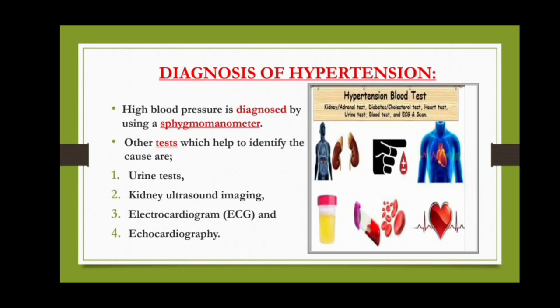Diagnosis of hypertension: High blood pressure is diagnosed by using a sphygmomanometer. Other tests which help to identify the causes are urine test, kidney ultrasound imaging, electrocardiogram or ECG, and echocardiography.